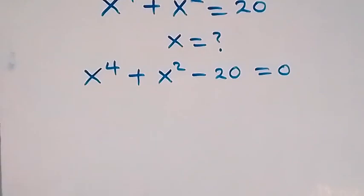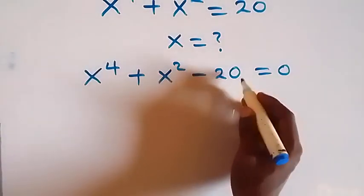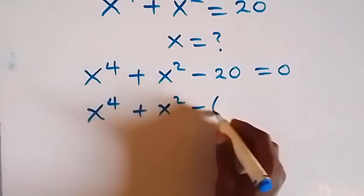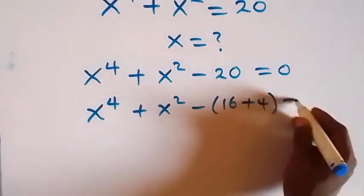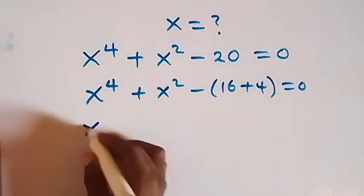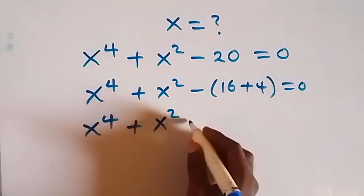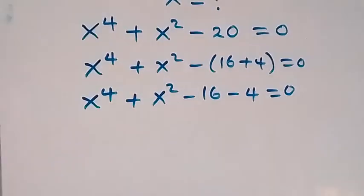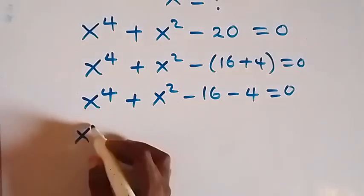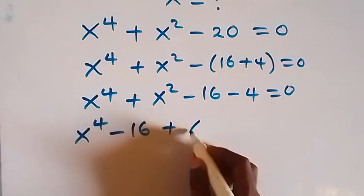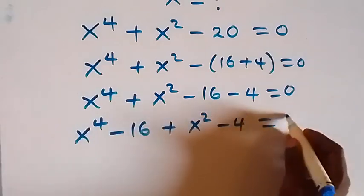From here, we can also write 20 as 16 plus 4, that's minus into bracket 16 plus 4. So we have x raised to the power 4 plus x square minus 16 plus 4 equals to 0. When we open this bracket, we have x raised to the power 4 plus x square minus 16 minus 4 equals to 0. Rearranging, we get x raised to the power 4 minus 16 plus x square minus 4 equals to 0.